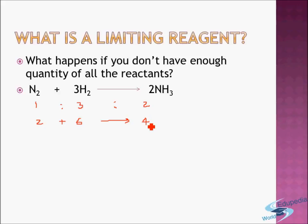But what happens if instead of six moles you have only five moles of hydrogen? You have two moles of nitrogen but only five moles of hydrogen. This scenario is quite possible — you don't always have infinite resources. You needed six moles of hydrogen but you only have five moles of hydrogen, so what are you going to do?